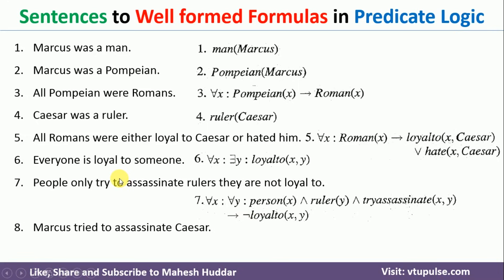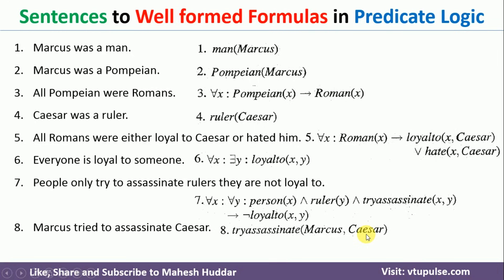Coming back to the eighth fact: 'Marcus tried to assassinate Caesar.' This is a very simple statement. The predicate tryToAssassinate(X, Y) means X is trying to assassinate Y. Here X is Marcus and Y is Caesar, so we write tryToAssassinate(Marcus, Caesar). That is how you write this particular statement.